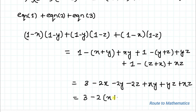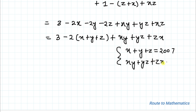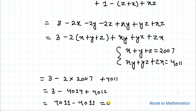We have given x plus y plus z equals 2007 and xy plus yz plus zx equals 4011. Substituting these values: we get 3 minus 2 times 2007 plus 4011, which equals 3 minus 4014 plus 4011, which equals 4014 minus 4014, equals 0.